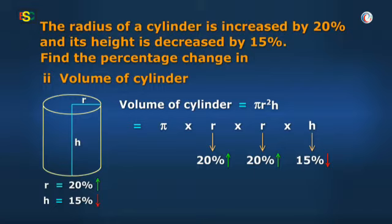So, we can say, Vidya, that there are three successive changes. The first increase of 20%, we can call R A. The next increase of 20% again, we can call it R B. And the decrease of 15%, we can call R C.